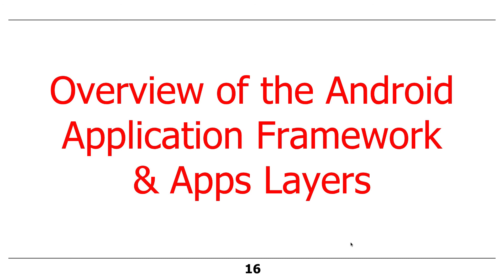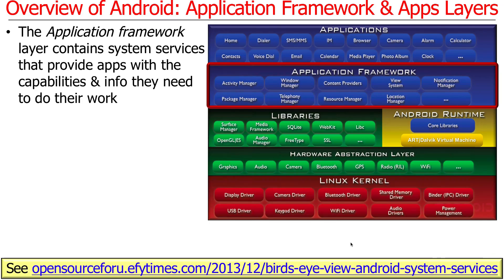Let's now talk about Android's application framework and apps layers, which are the two highest layers in the Android stack. The application framework layer contains a bunch of frameworks which are instantiated and run as so-called system services. System services are used to provide apps with various information and capabilities that they need. One of the system services in the application framework layer is the window manager, which handles user interface interactions and manages windows.